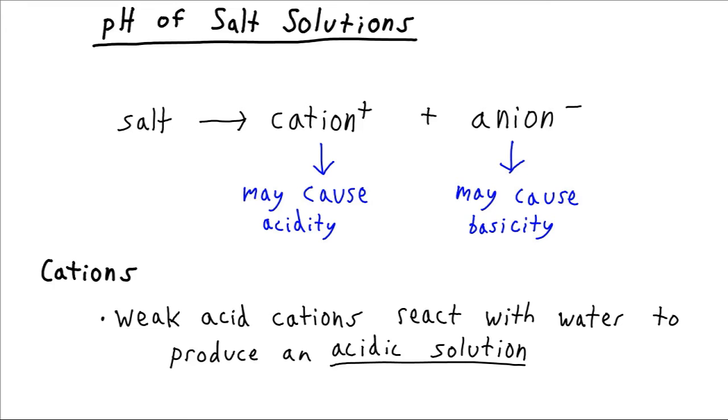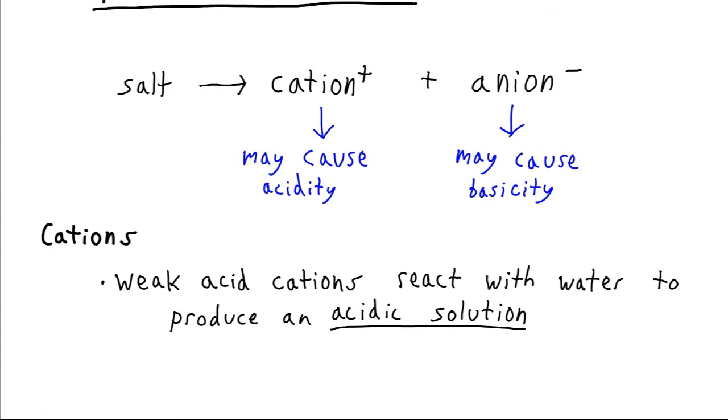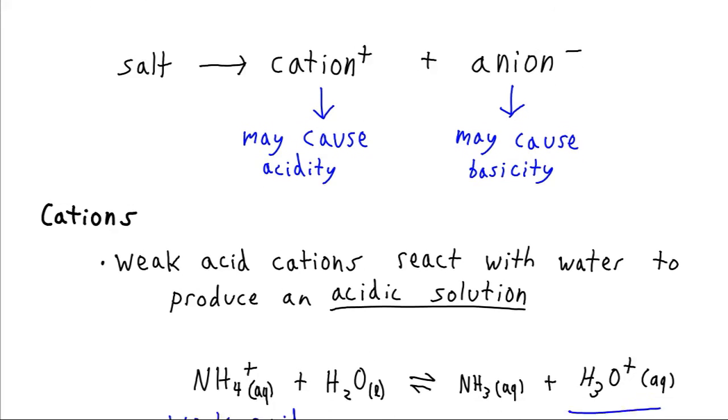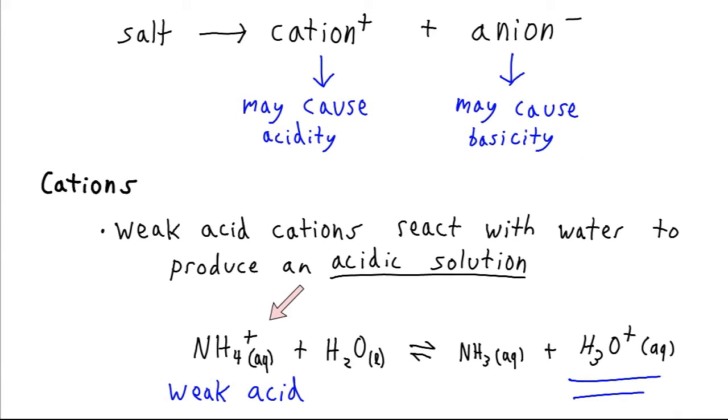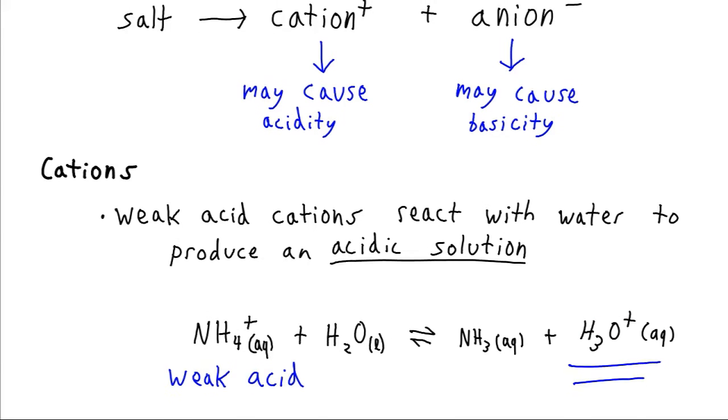There are a few cases for what we may have as a cation. If we have a weak acid for our cation, then that will have an acidifying effect on the solution. So here we have ammonium NH4-plus, and it reacts with water to produce its conjugate base ammonia and hydronium. Since it produces this hydronium, or we can think of it also as H-plus in the solution, then it's going to acidify the solution.